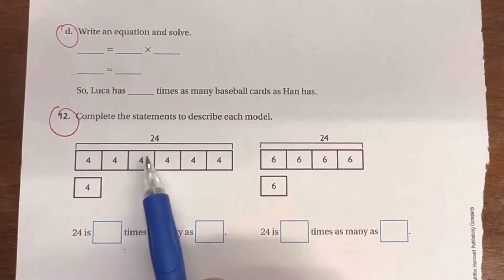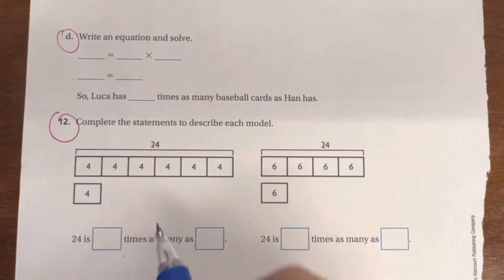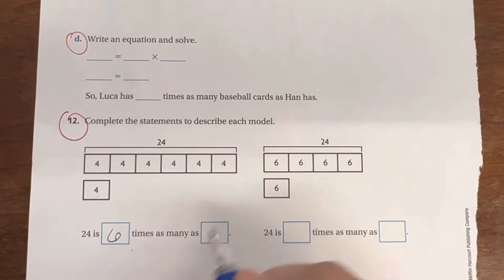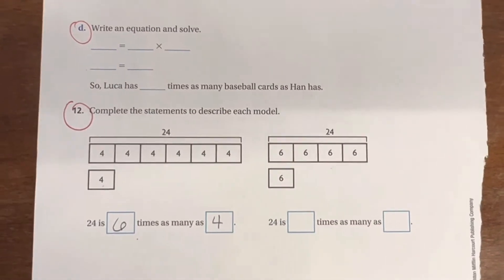Look at this: 1, 2, 3, 4, 5, 6. So 24 is 6 times as many as 4. That is what that tape diagram is showing you.